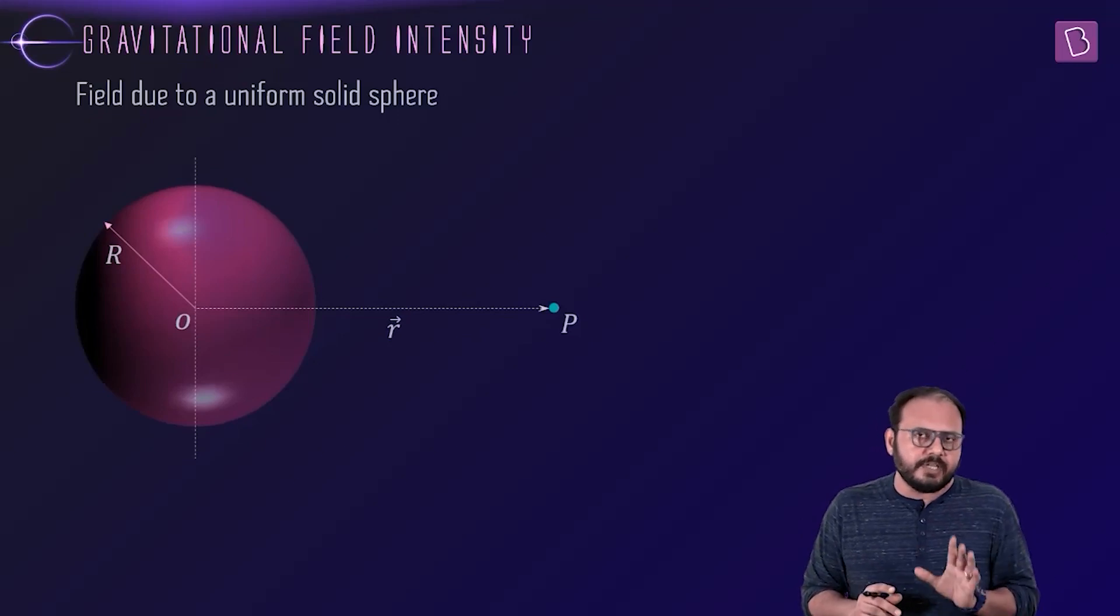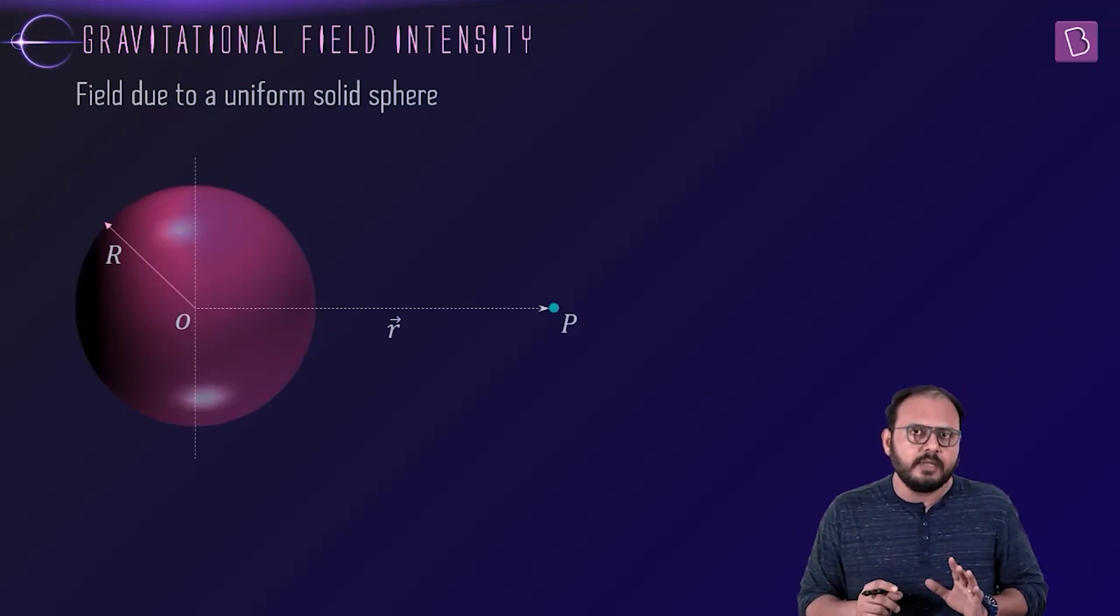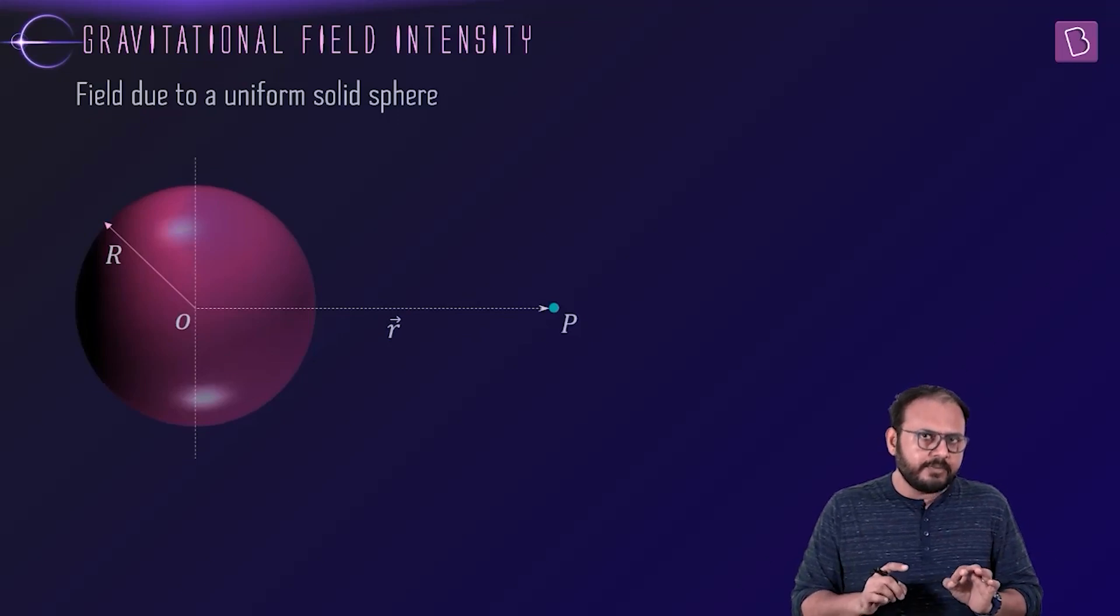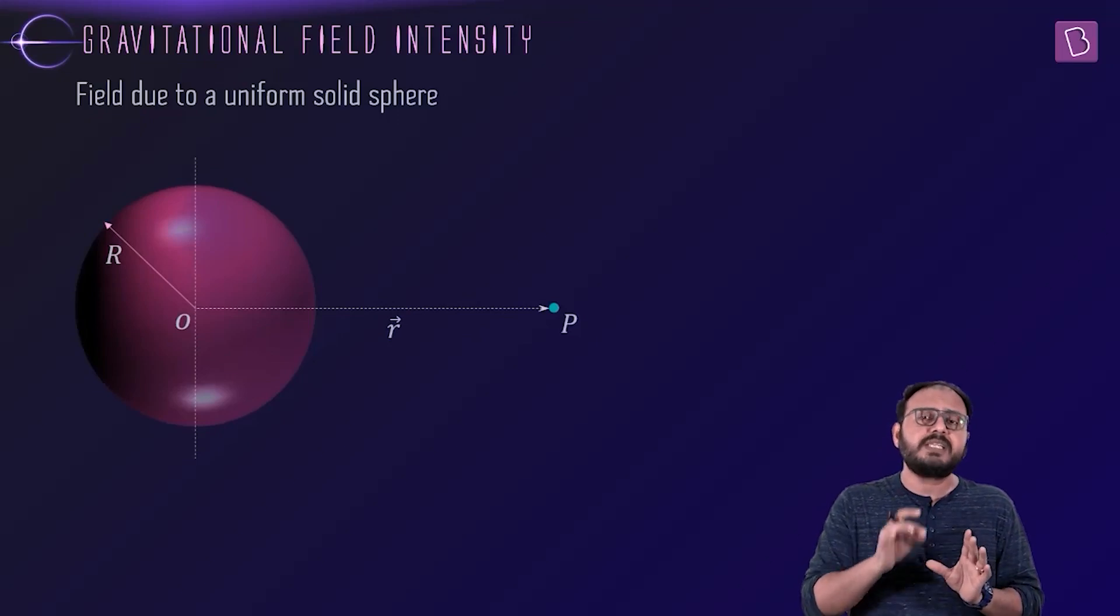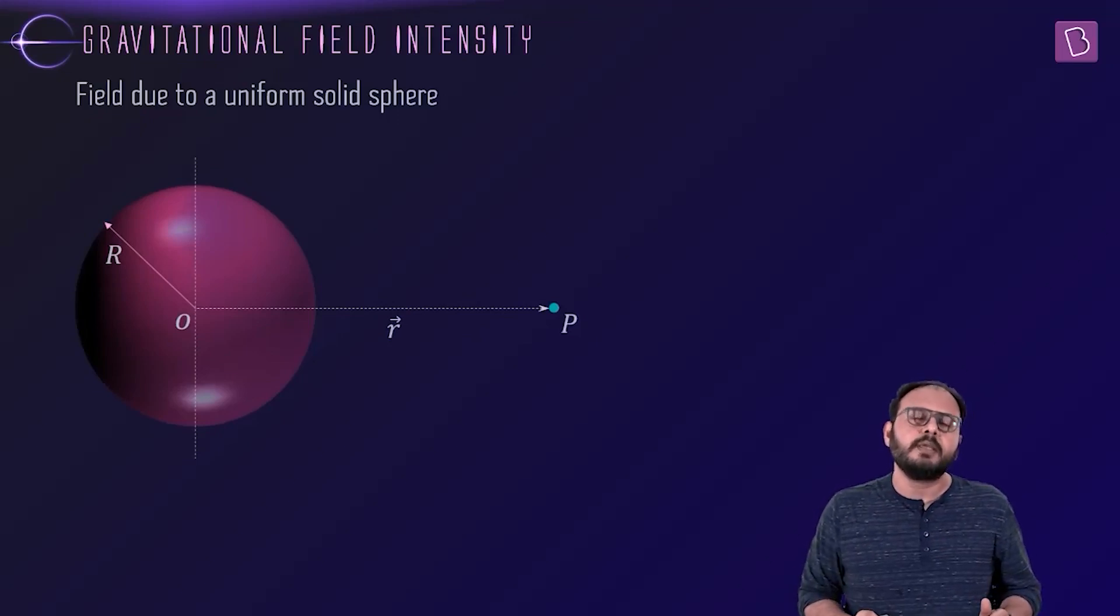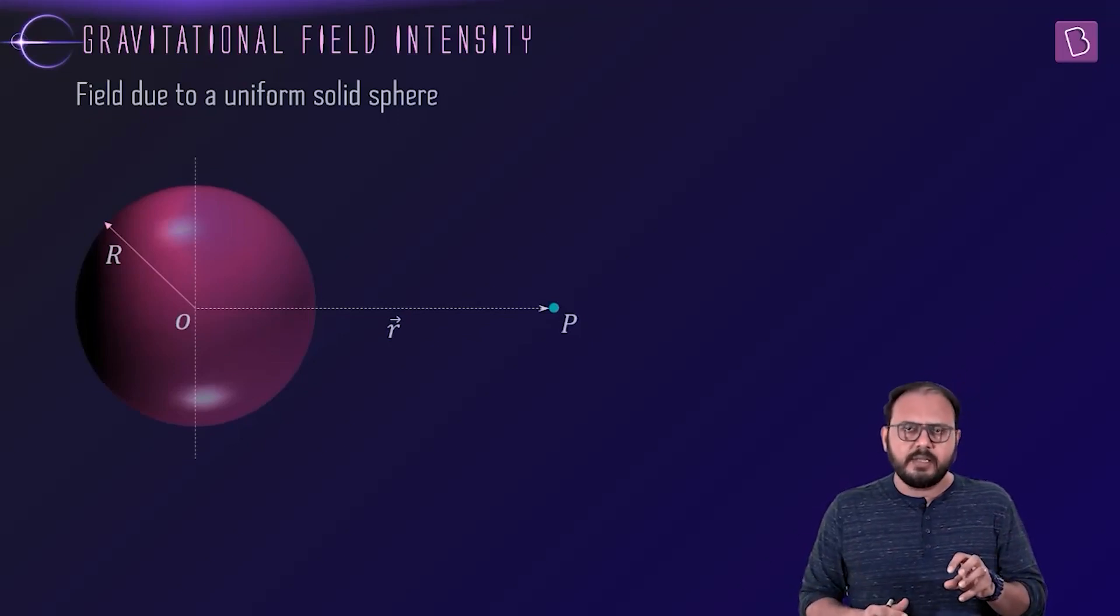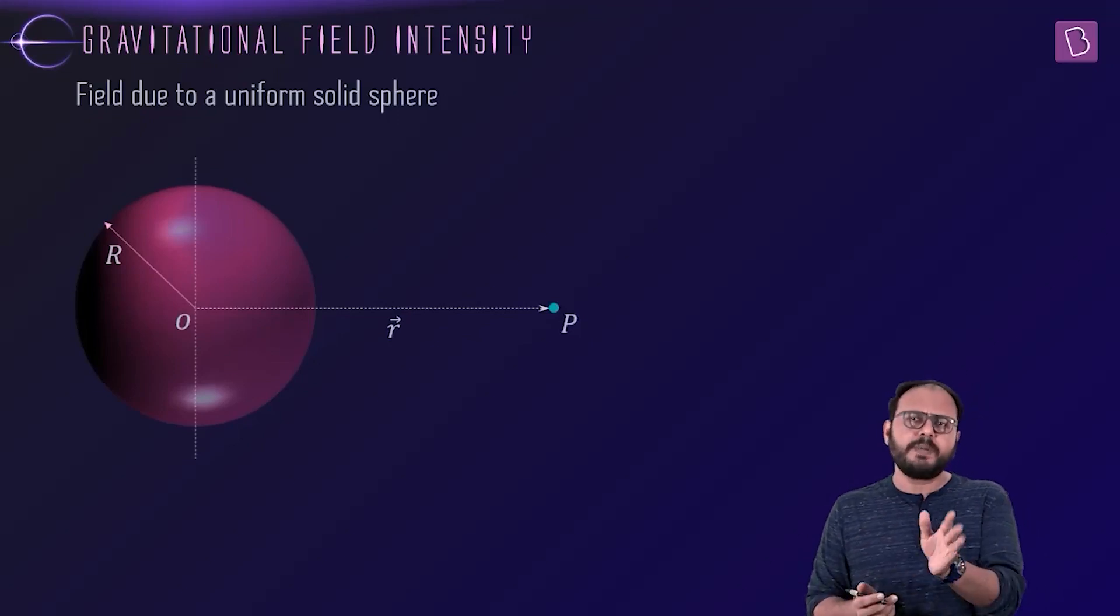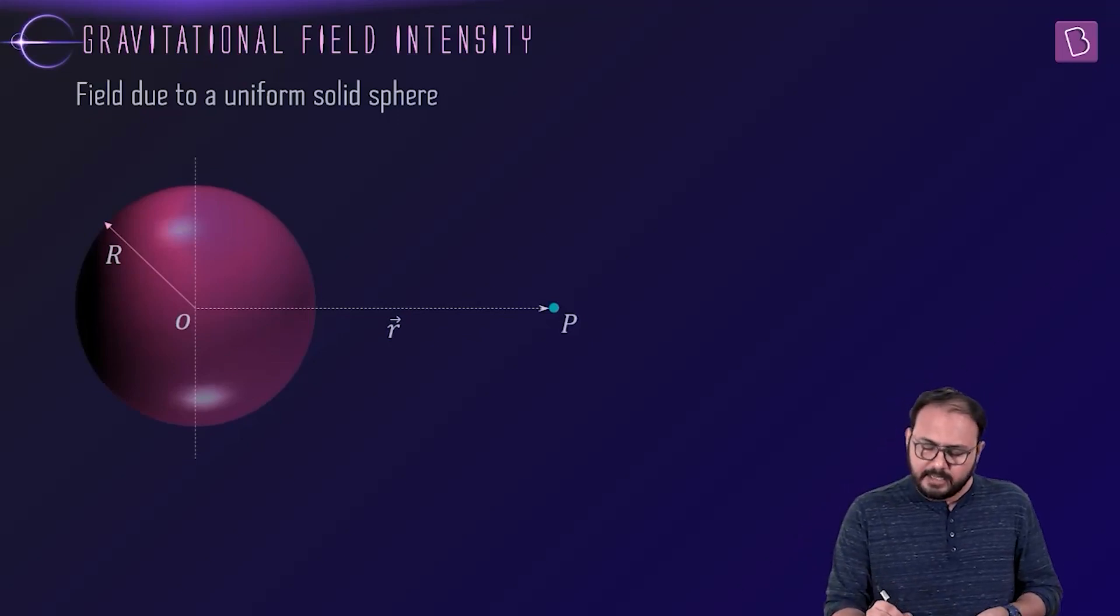On paper, is it okay to say that the total gravitational field at an outside point for a solid sphere can be obtained by vector sum of gravitational field due to every uniform spherical shell it is made up of? There are a trillion shells which make up this solid sphere. Can I find a trillion field values and add them vectorially? On paper it sounds good, but how will you do that?